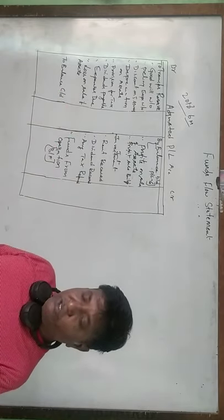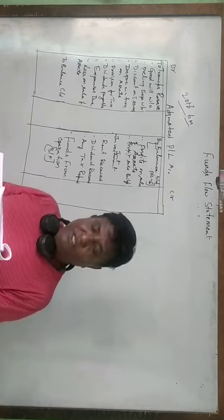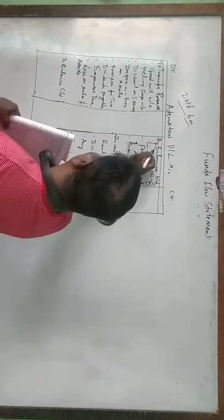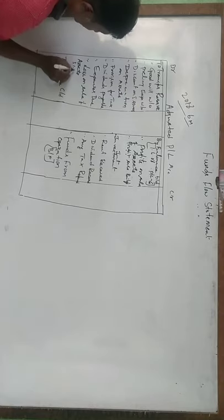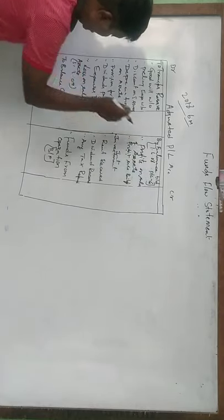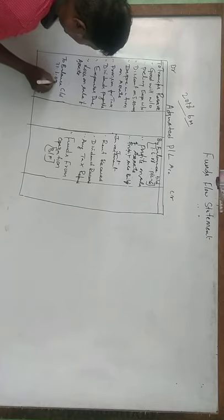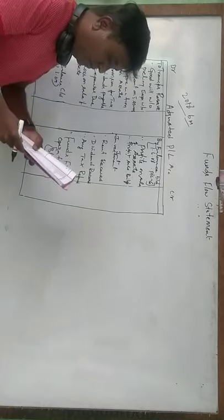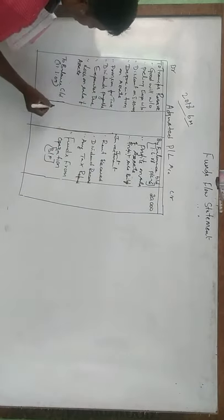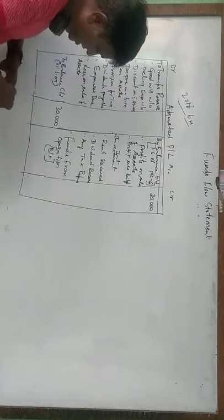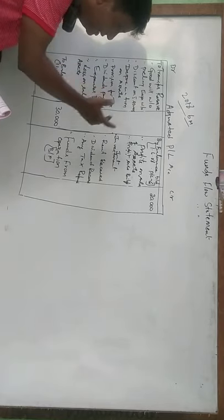The profit and loss account of a company for the year ending 31st March 2008 and 31st March 2009. This is the opening balance and closing balance of the profit and loss account. The opening balance is 20,000 rupees and the closing balance is 30,000 rupees. You need to read the question and see which point is coming either in the debit side or in the credit side.